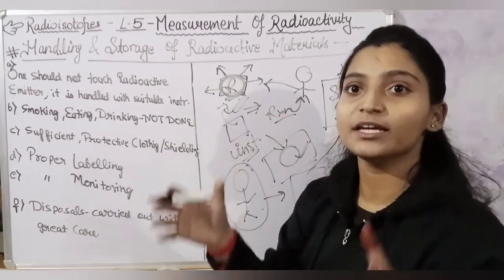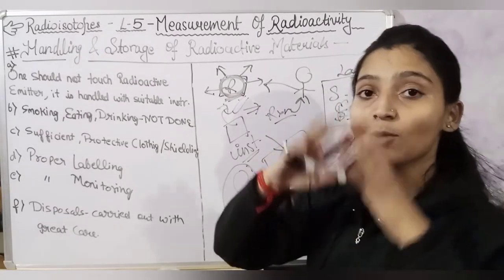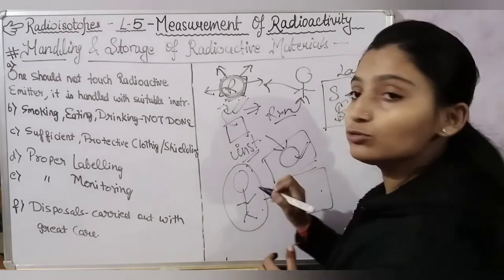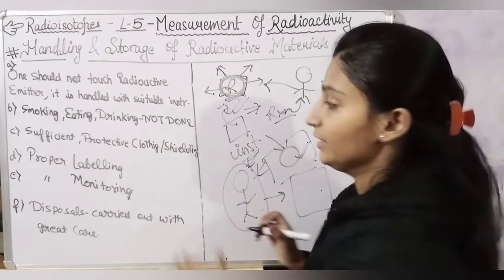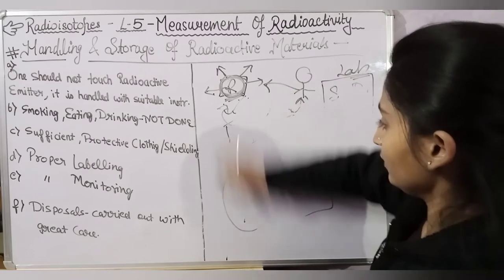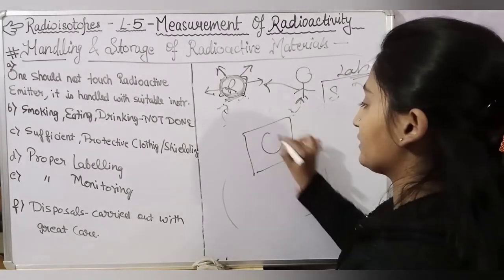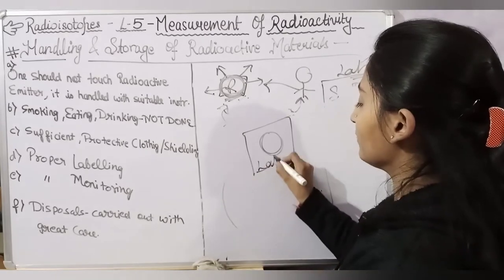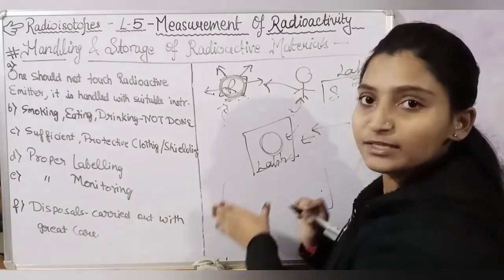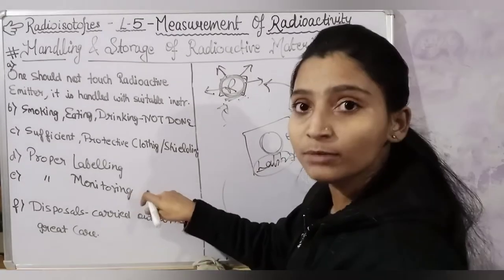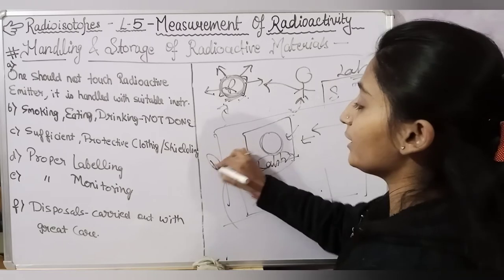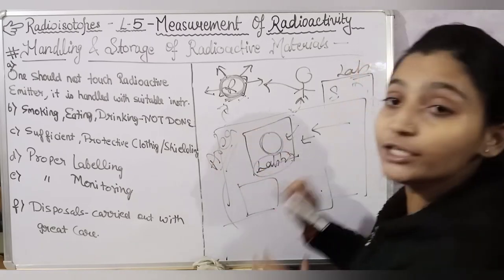Another point is that smoking, eating, and drinking must not be done in the laboratory, as this increases chances of contamination and affects the quality of the product. There should be sufficient protective clothing and shielding. Workers should enter a proper shielding area, for example in pathology, so that radioactive rays do not affect them. There should also be proper labelling of all boxes where radioactive elements are stored, along with proper monitoring of the storage area.